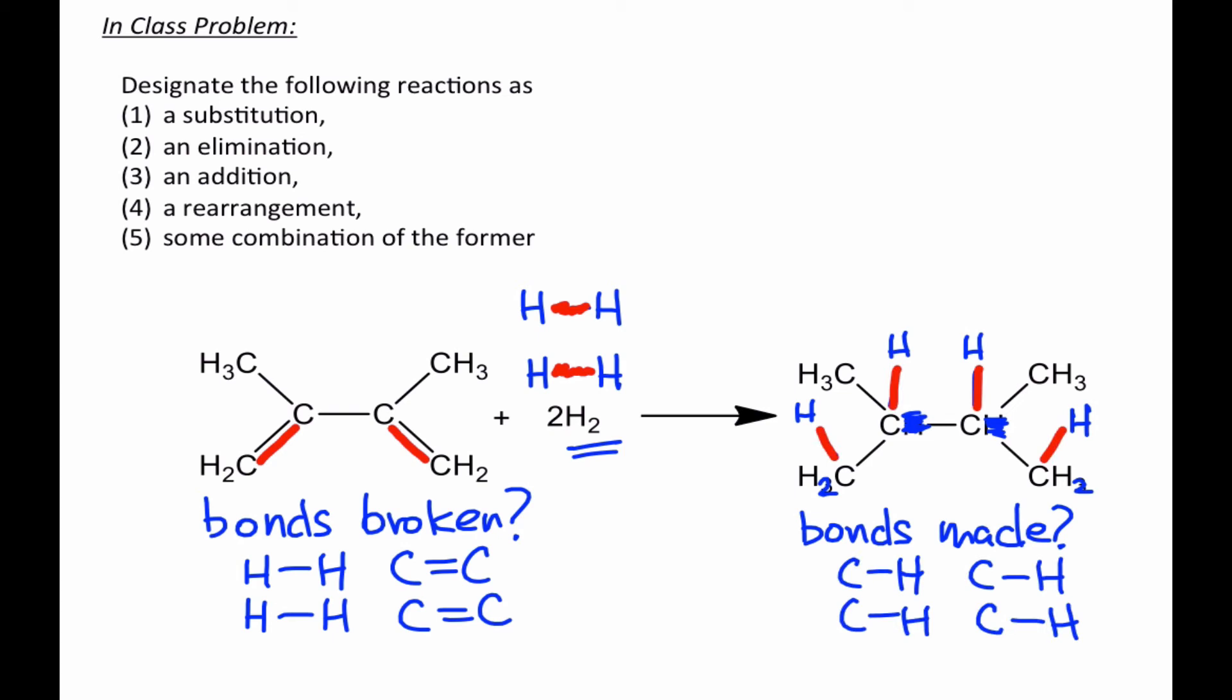With all these written out, we can sort of draw a dividing line between the two sets of bonds made and broken and see that the same process is essentially happening twice at these two pi bonds. There's an H-H single bond that's breaking, a C-C pi bond that's breaking, and two new C-H bonds that are forming.